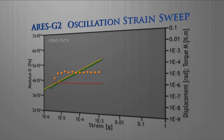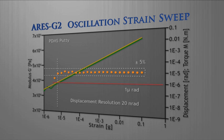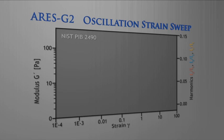The ARES G2 motor can control oscillatory strain levels down to one micro radian, allowing for classic linear viscoelastic analysis of materials with very delicate structures. Non-linear material behavior is observed as a decrease in G prime in the strain sweep.